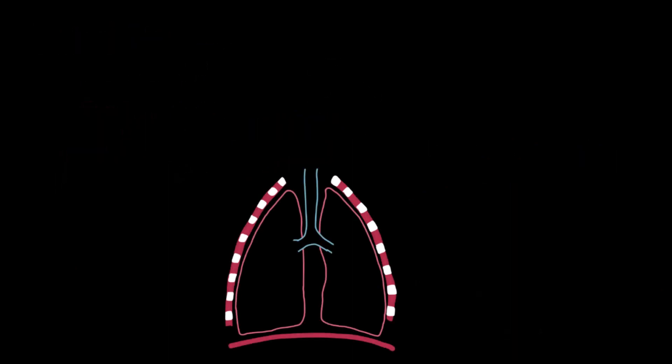In addition to chemoreceptors, we have mechanoreceptors, particularly stretch receptors located in the lungs, airways, and chest wall. These are part of a protective mechanism known as the Hering-Breuer reflex.